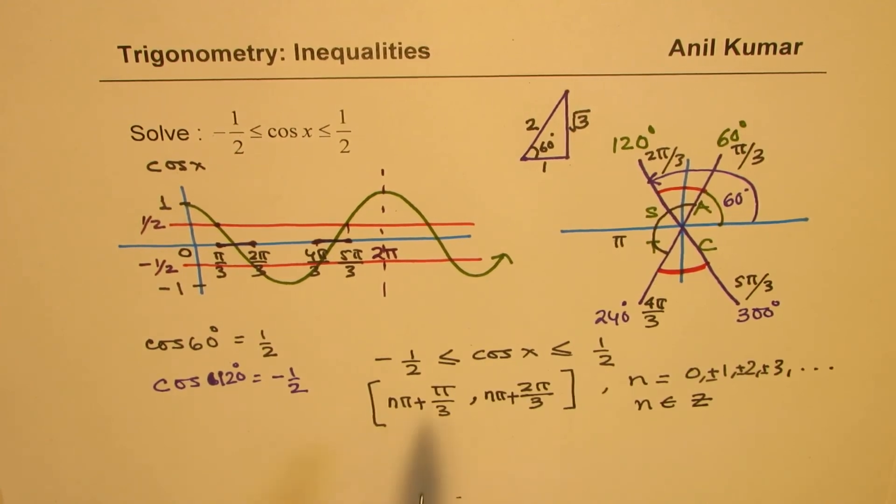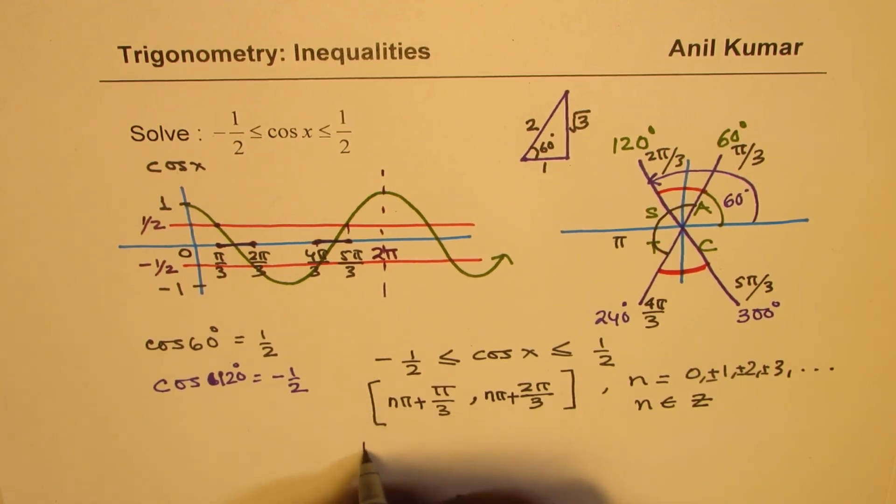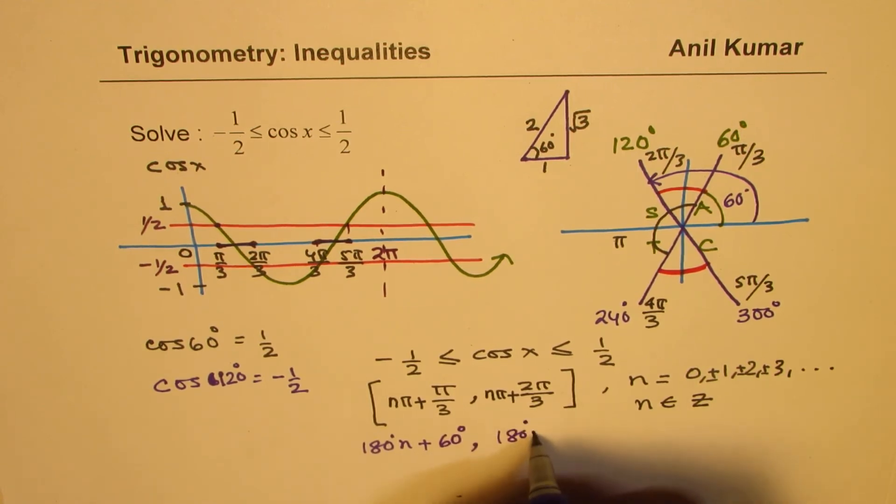So that works. So we have the solution right here. If you're working with degrees, in that case, nπ is like n·180. 180 times n plus this angle is 60 degrees. 60 degrees to 180 degrees times n plus this angle is 120 degrees. So that could be a solution when you're working in degrees.